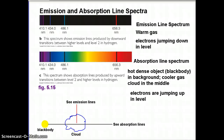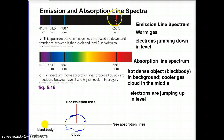Now, back to absorption and emission line spectra. We talked about there being three types of spectra: continuous spectra, emission lines, and absorption lines. Emission lines are when the electron jumps down in level. Absorption lines happen when an electron absorbs a photon and jumps up in level. For a given element like hydrogen, those energies and wavelengths are exactly the same whether it's absorption or emission — jumping from 10.2 eV down to zero, or zero to 10.2 eV gives the same photon energy, frequency, and wavelength.